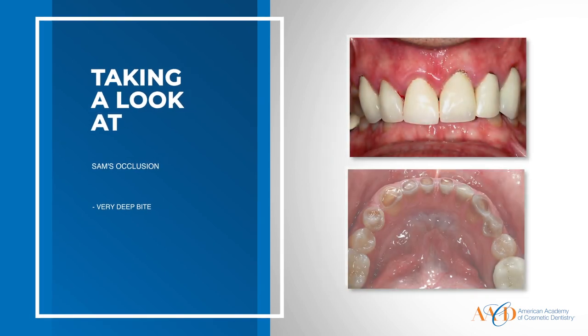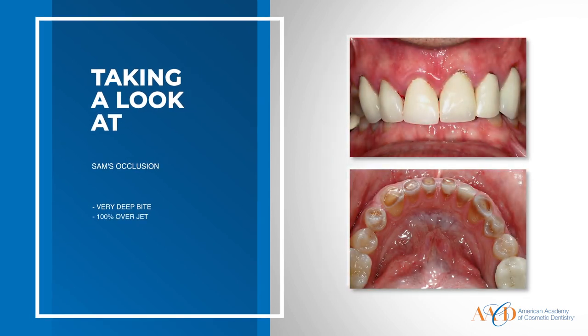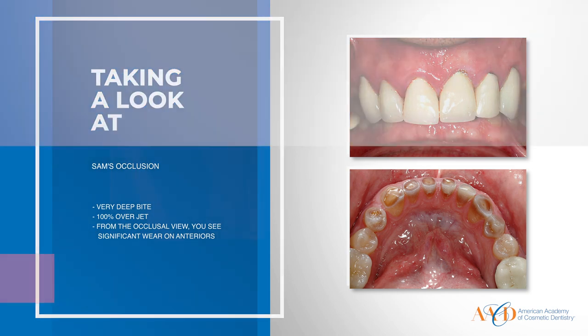Looking at Sam's occlusion, you can see he has a very deep bite — 100% overjet, where the maxillary anterior teeth completely overlap the lower anteriors. From the occlusal view, you can see the significant wear on the anterior teeth. Again, is this from a constricted envelope of function due to the shape of the lingual surfaces of those anterior crowns? Looking at the posterior teeth, there's very little wear on the second premolar buccal cusp, and essentially no wear at all on the lower left second bicuspid and molar.